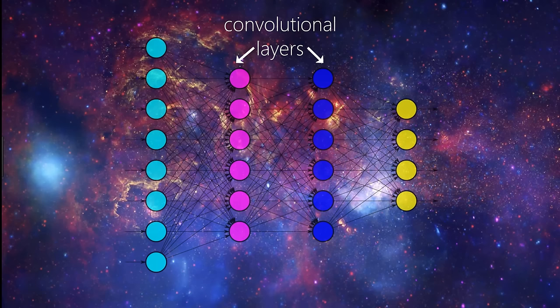Now CNNs can and usually do have other non-convolutional layers as well, but the basis of a CNN is the convolutional layers.